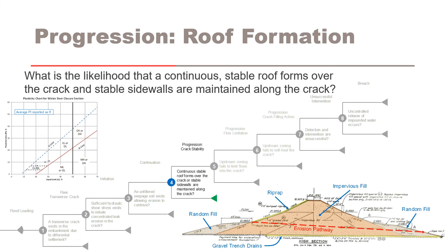For node 4 — progression: roof formation — what is the likelihood that a continuous stable roof forms over the crack and stable sidewalls are maintained? The impervious fill used to construct the homogenous embankment has an average fines content of about 70%, and the fines have some plasticity, making it virtually certain for the crack to hold a roof and stable sidewalls continuously from upstream to downstream. This is consistent with what was observed in 1949, where leakage and erosion continued until the reservoir elevation was lowered below the erosion tunnels.